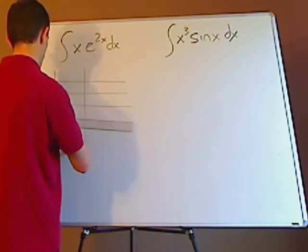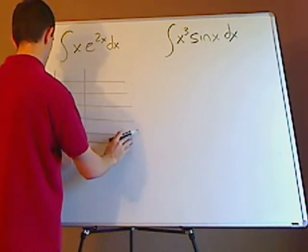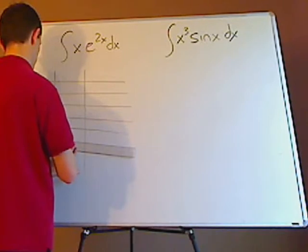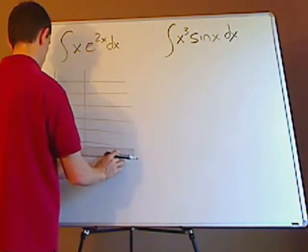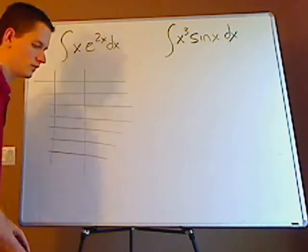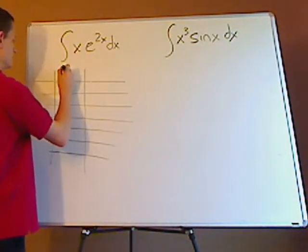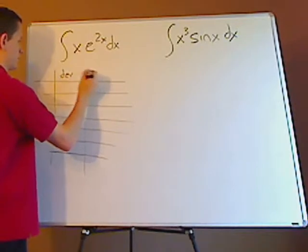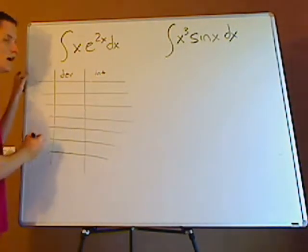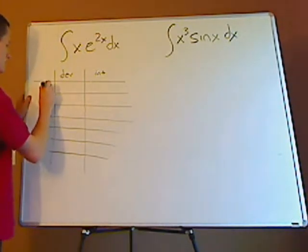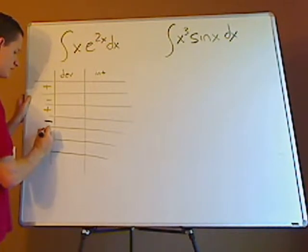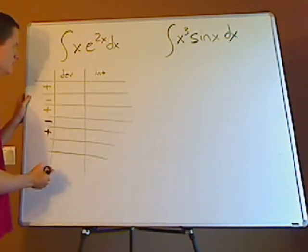So first you want to set up your table. I might have saved more video time if I made the table beforehand. I'm going to put the derivative here and the integral here. Now on the side, the sign changes: plus, minus, plus, minus, plus, and it's going to keep on doing that.